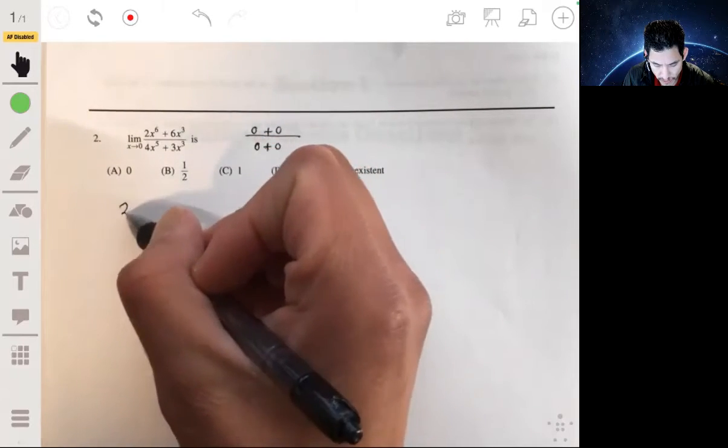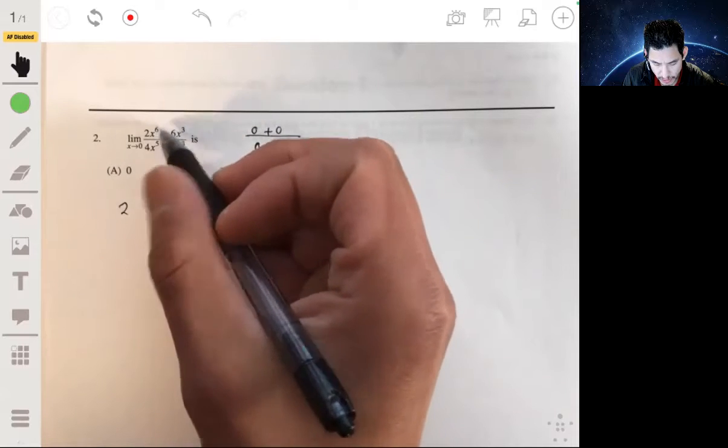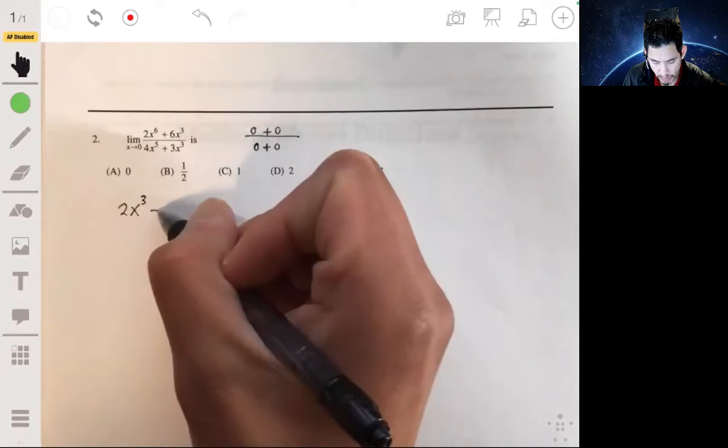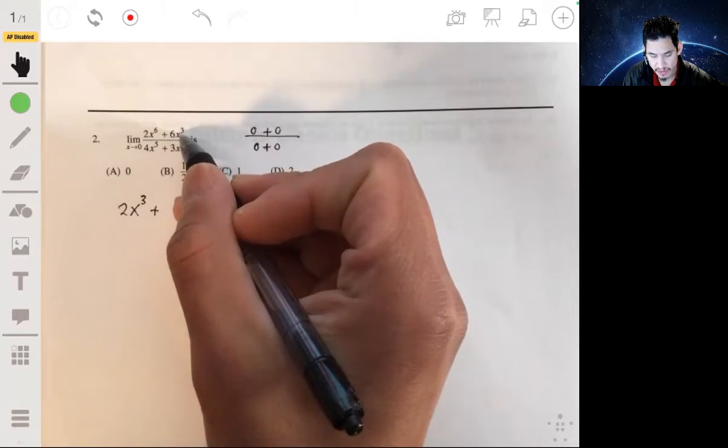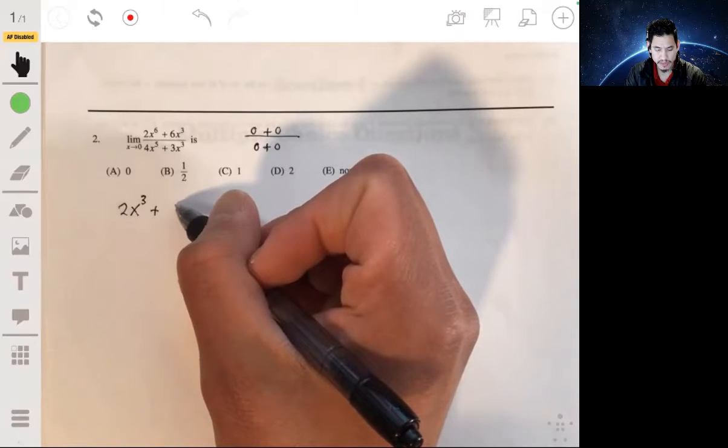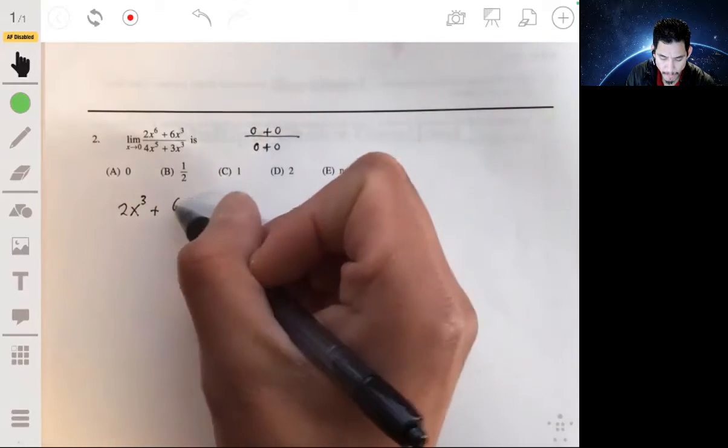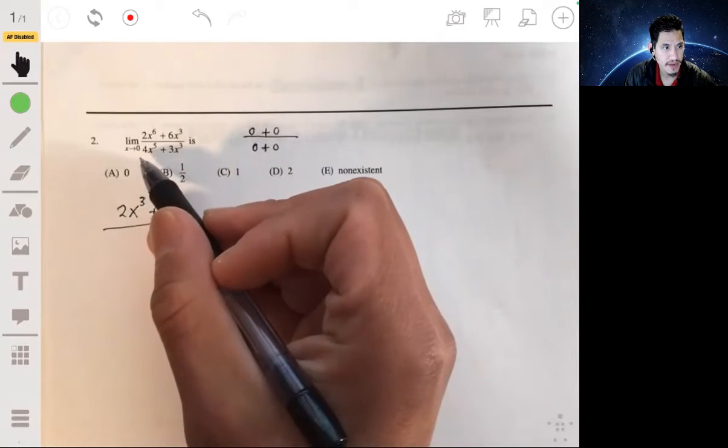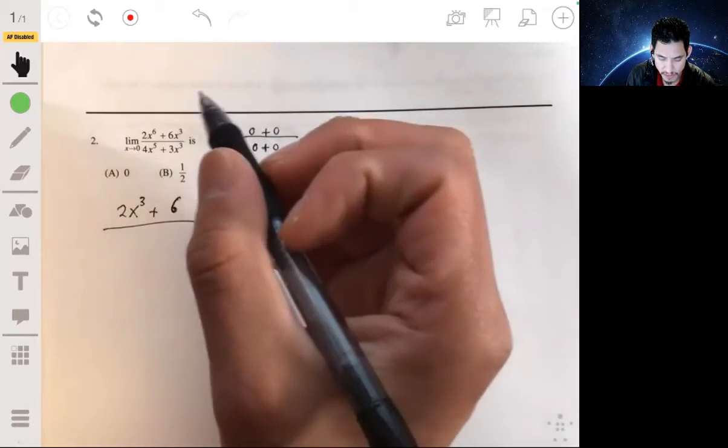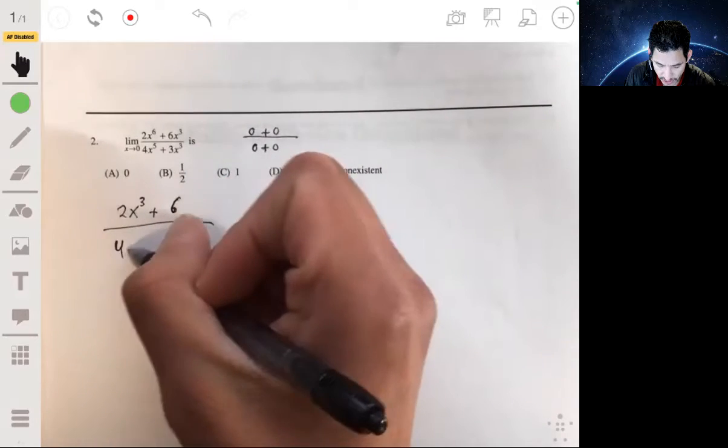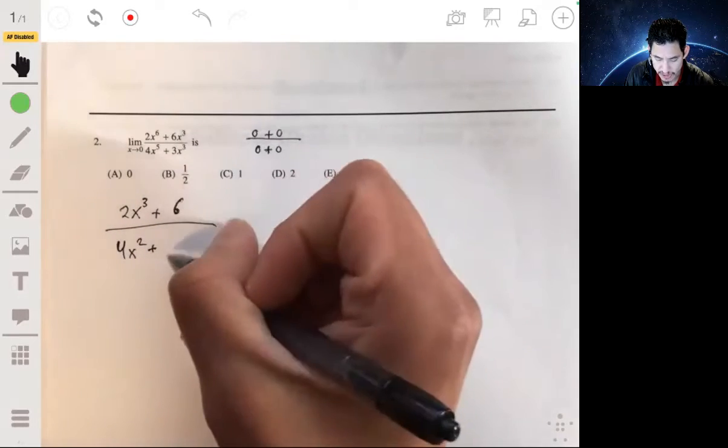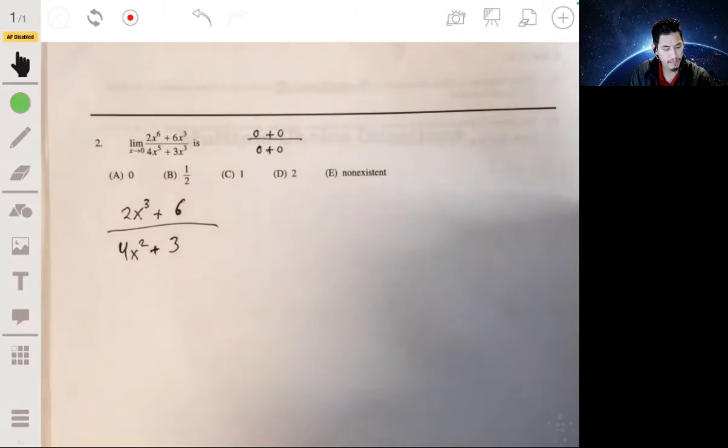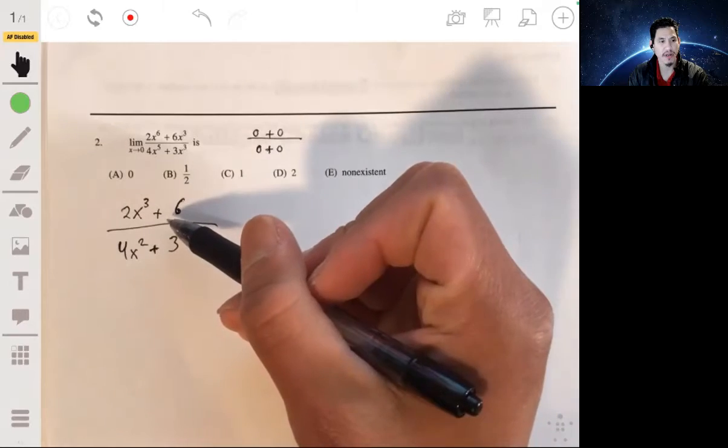We have 2x to the sixth over x cubed, that'll be 2x cubed, plus 6x cubed over x cubed, then divide 4x to the fifth by x cubed, that'll give us 4x squared, and 3x cubed divided by x cubed will be plus 3.